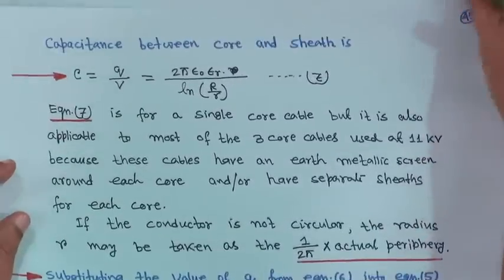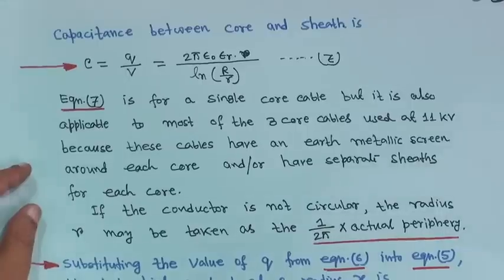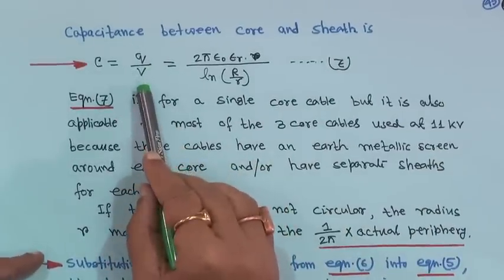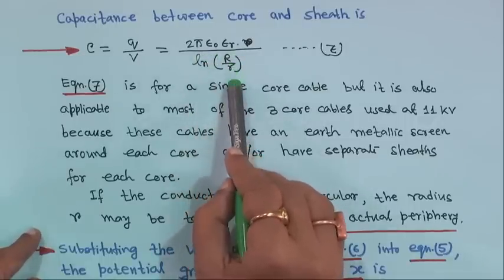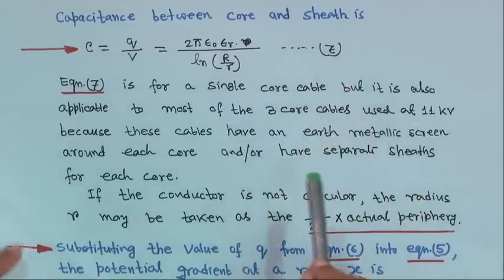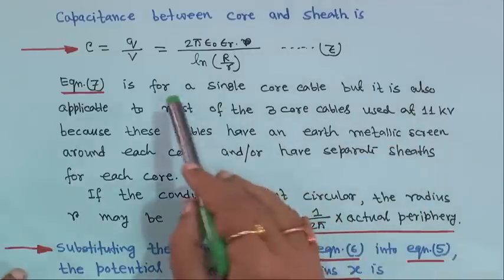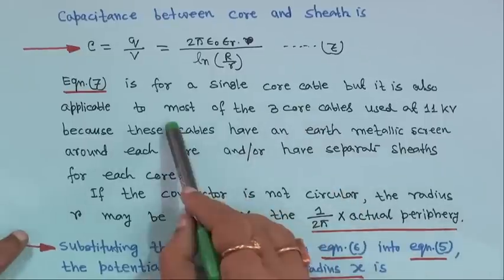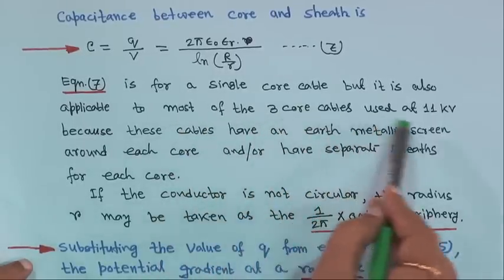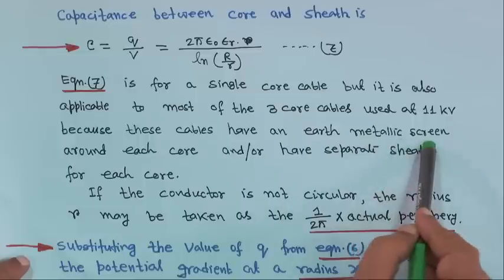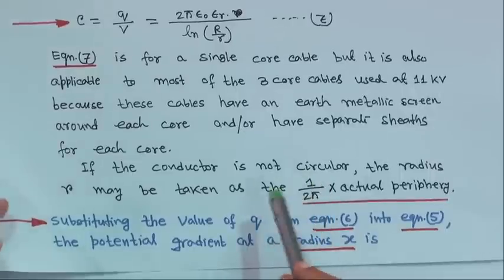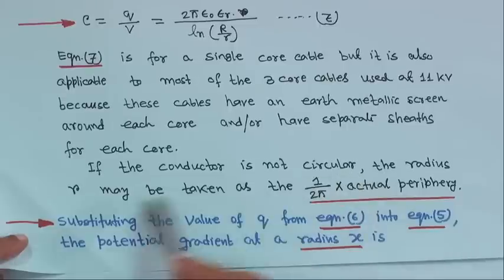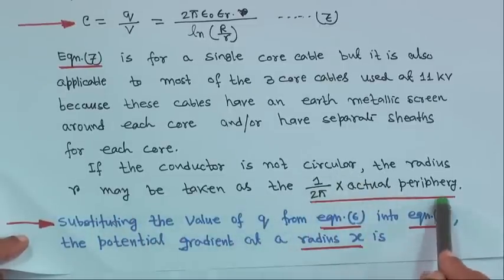Therefore, capacitance between core and sheath is C = q/V = 2π ε_0 ε_r / ln(R/r) — equation 7. Equation 7 is for a single core cable, but it is also applicable to most 3-core cables used at 11 kV, because these cables have a metallic screen around each core or have a separate sheath for each core.